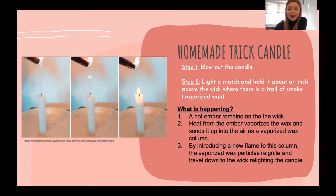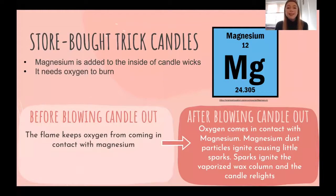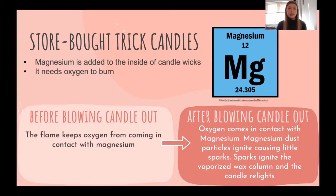So what is happening? A hot ember remains on the wick after you blow the candle out. Heat from this ember vaporizes the wax and sends it up into the air as a vaporized wax column. By introducing a new flame to this column, the vaporized wax particles reignite and travel back down to the wick relighting the candle. But what's the trick behind store-bought trick candles? Magnesium. Magnesium is a highly reactive metal. It's added to the inside of these candle wicks and it needs oxygen to burn.